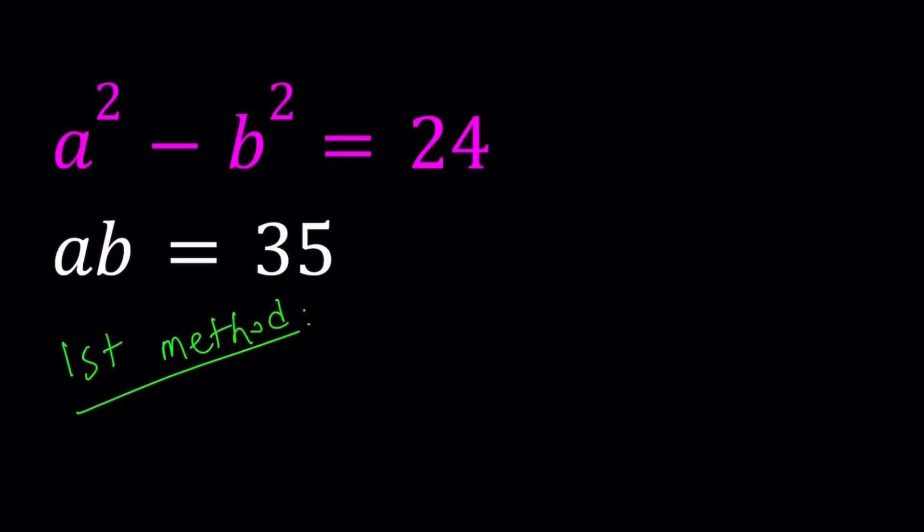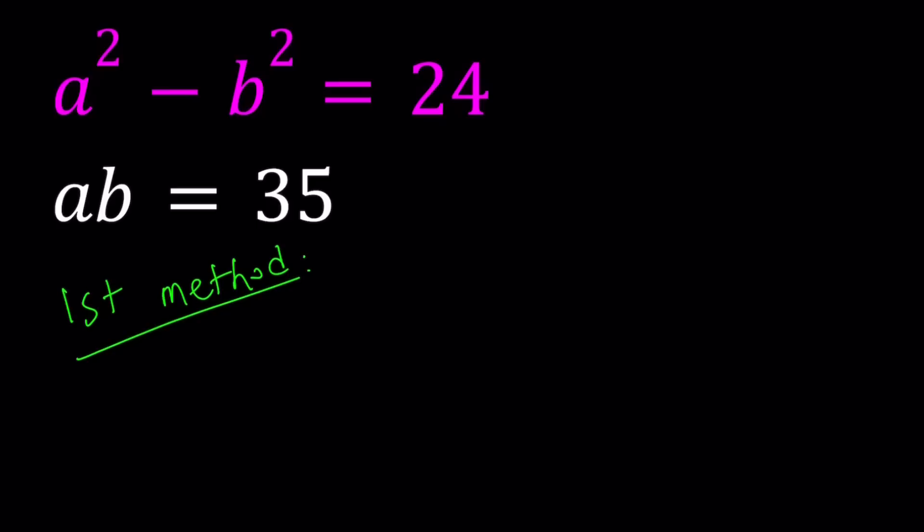My first method can be summarized as substitution. The second method involves some algebraic manipulations or identities. For the first method, I'm going to isolate b, so I'll write b as 35 over a. Notice that a equals 0 does not work, so we can divide by a. We're going to substitute this into the first equation.